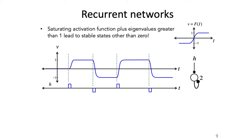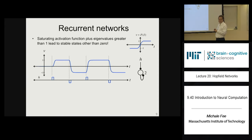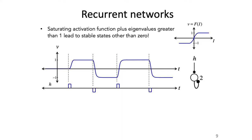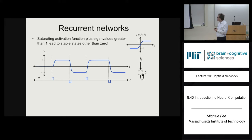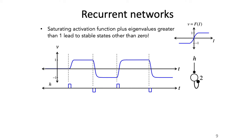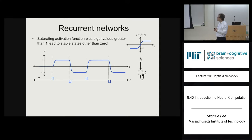This network has one unstable fixed point at 0: if it sits exactly there, it stays, but a small nudge causes it to run toward stable fixed points at 1 or minus 1. These two are stable fixed points because small perturbations return to them. We can think about this like a ball on a hill: the unstable point is at the peak, and the two stable fixed points are the valleys — these are called attractors.